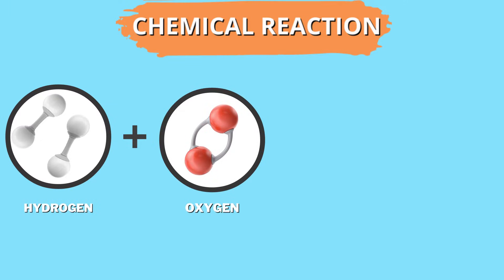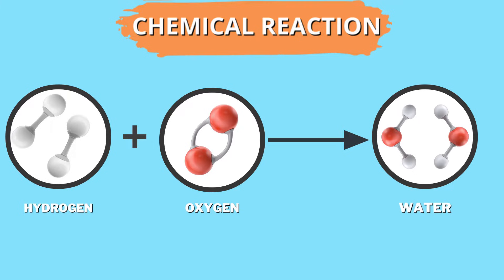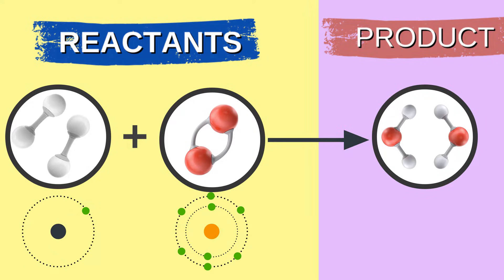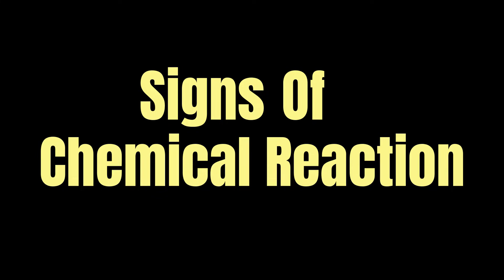During a chemical reaction, the atoms rearrange and combine to form new substances. The reacting elements are called reactants, and the new substance is called the product. That's why the product always has a different chemical identity. But how can we tell that a chemical reaction happened?